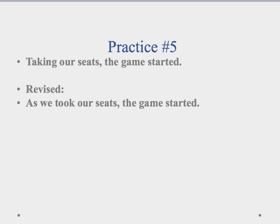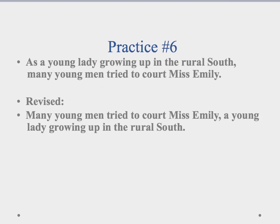'Taking our seats, the game started.' Again, an opening modifier — but it's not the game taking our seats. We're the ones taking our seats, but the word 'we' is missing, making this a dangling modifier. Revised: 'As we took our seats, the game started.' Another example: 'As a young lady growing up in the rural South, many young men tried to court Miss Emily.' The opening modifier sounds like it describes the young men, which is confusing. Revised: 'Many young men tried to court Miss Emily, a young lady growing up in the rural South.' Moving the modifier to the end fixes it.